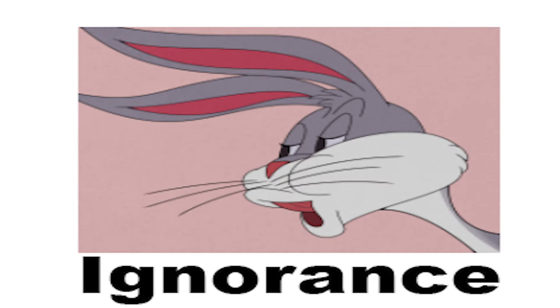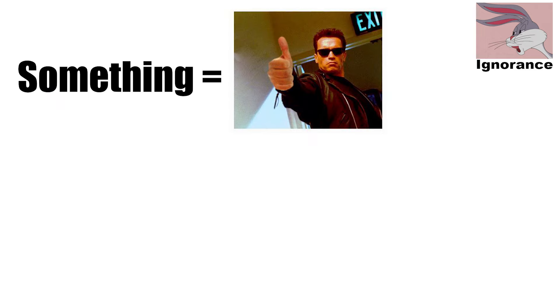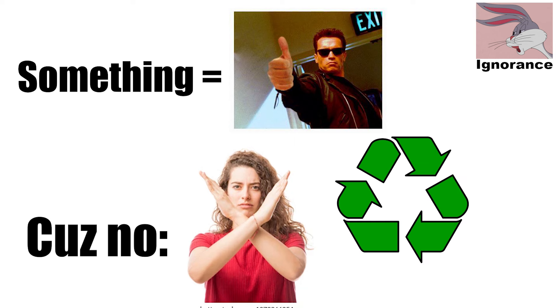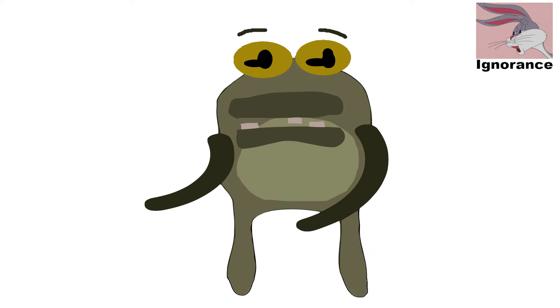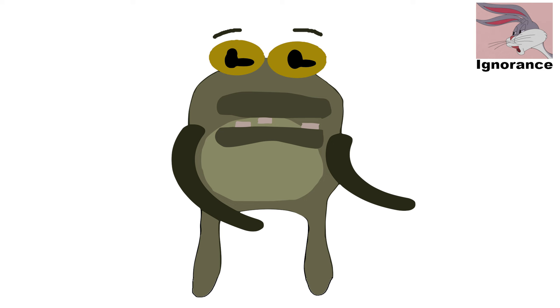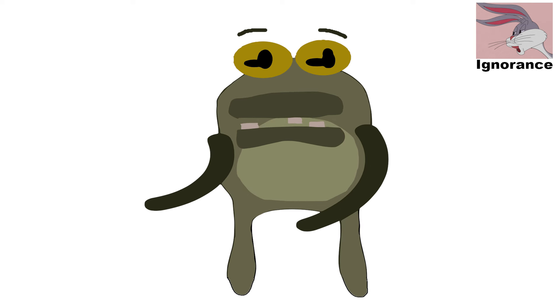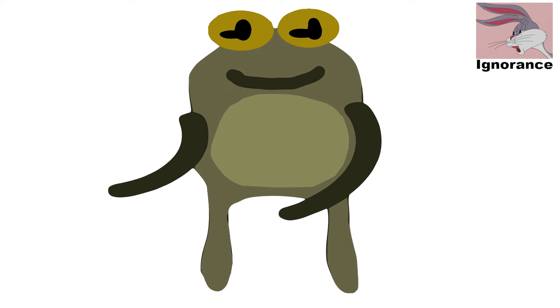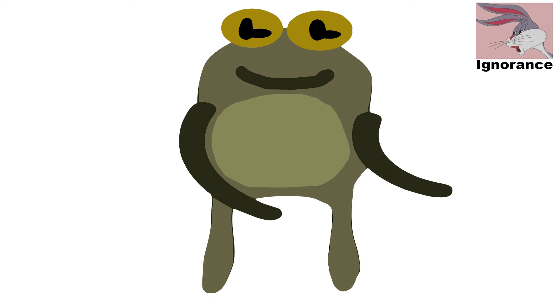Appeal to ignorance. The appeal to ignorance fallacy occurs when it's argued that something must be true because it hasn't been proven false, or vice versa. An example is saying, no one has proven that aliens don't exist, so they must be real. The absence of evidence isn't evidence of absence. But it's true, guys — aliens definitely don't exist.